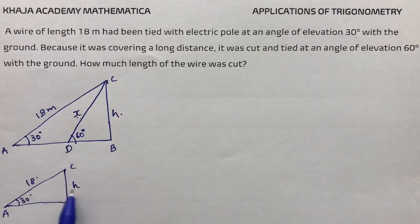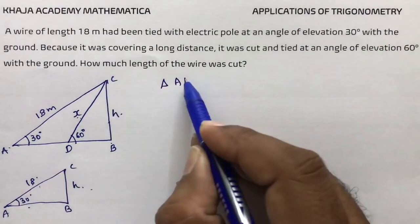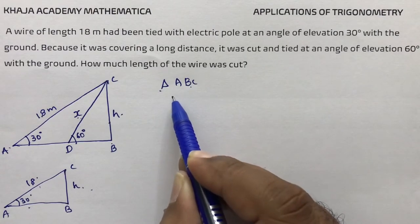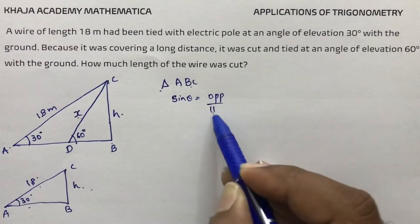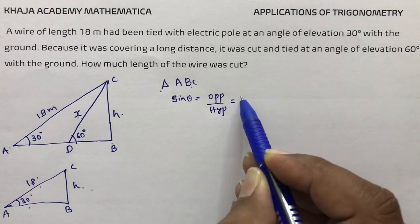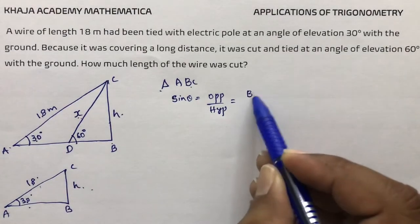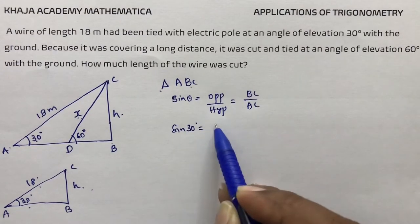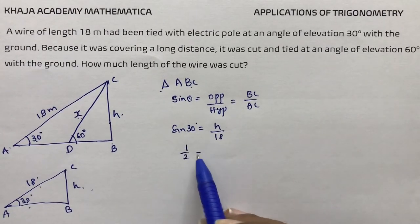In triangle ABC, sin theta is opposite by hypotenuse. Taking theta as 30 degrees, the opposite is BC which is H, and hypotenuse is AC which is 18. So sin 30 equals H by 18. Sin 30 is 1 by 2, so 1 by 2 equals H by 18.